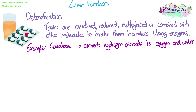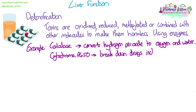Cytochrome P450 is another enzyme present in the liver. There are many cytochromes in the body that help with various functions, including being part of the electron transport chain, which is necessary for respiration. However, cytochrome P450 specifically helps to break down drugs, including cocaine. When cytochromes are used for drug metabolism, they may not be available for respiration and other metabolic reactions, which is why drugs can produce side effects.